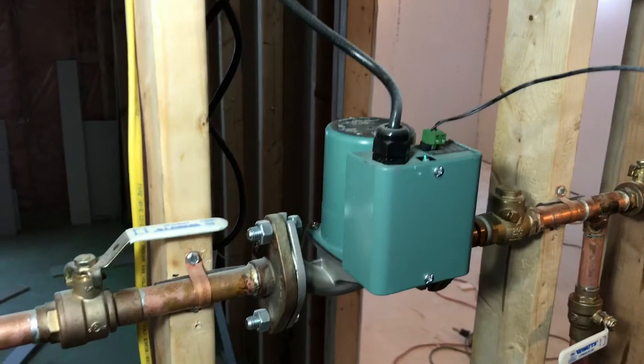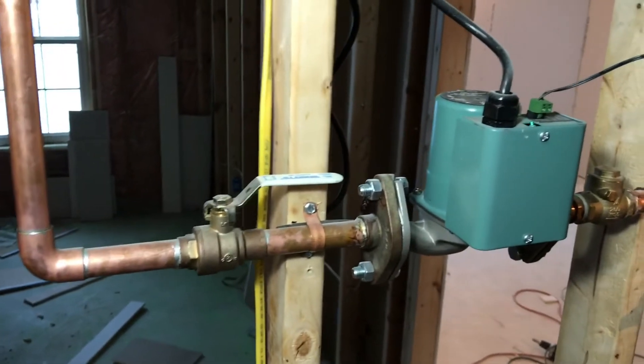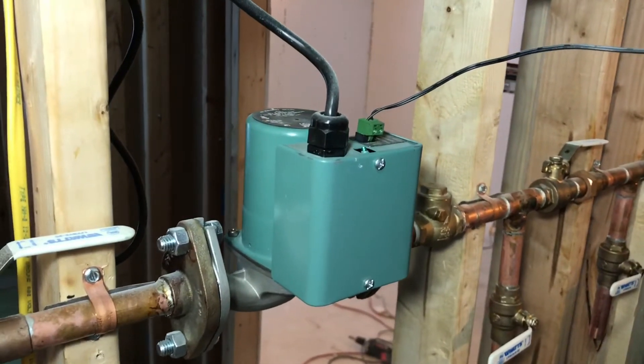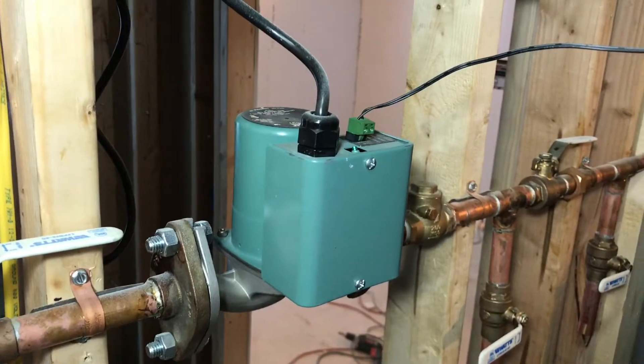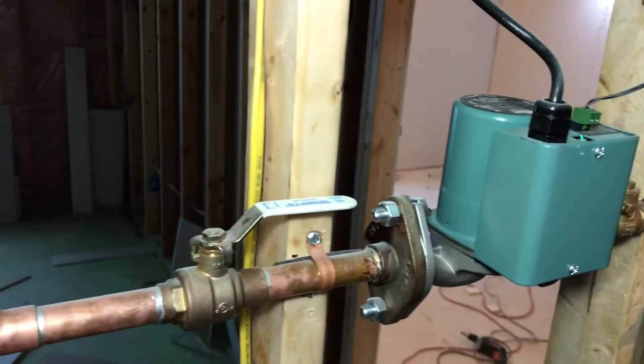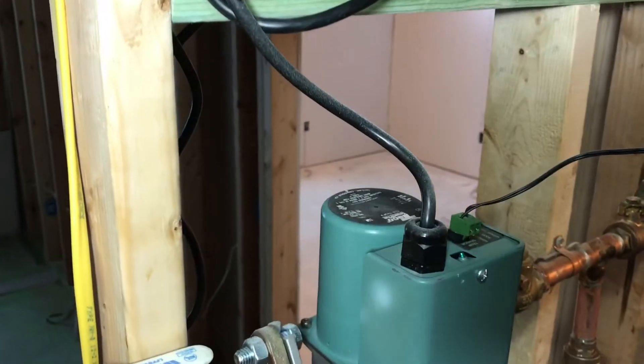This is my Taiko hot water circulator. It keeps hot water in my main line so we have almost instant hot water to my hot water fixtures throughout the house. I will show you how I went about installing this.